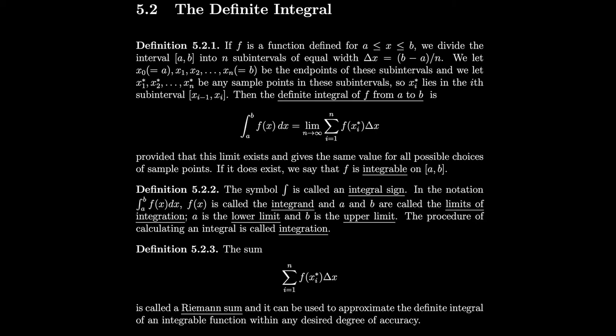If it does exist, we say that f is integrable on a, b. This symbol is called an integral sign. In the notation integral from a to b of f of x dx, f of x is called the integrand. a and b are called the limits of integration — that's the lower limit and upper limit of integration. The procedure of calculating an integral is called integration.